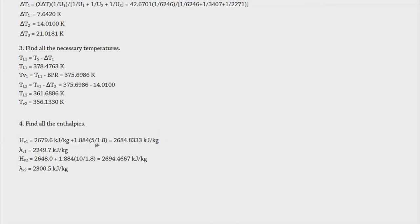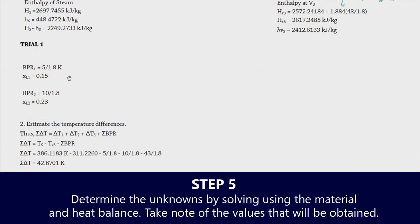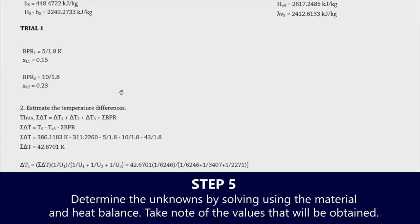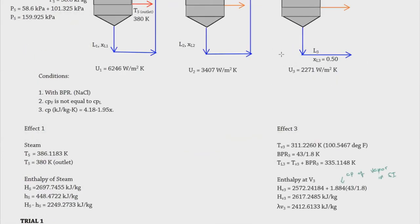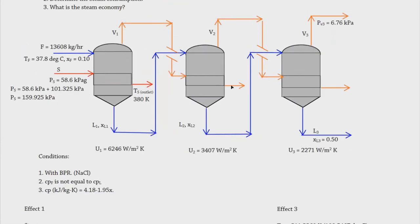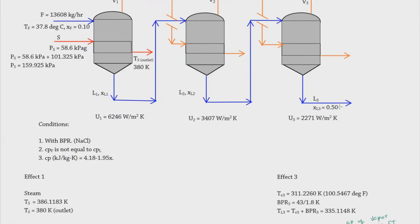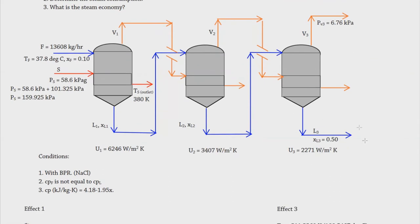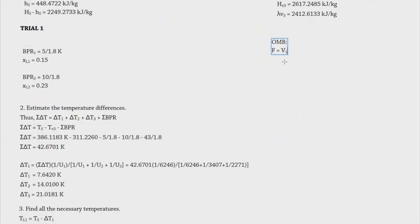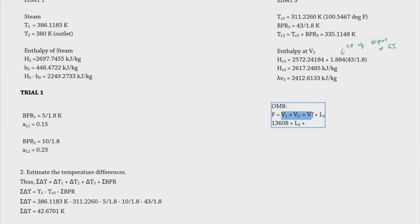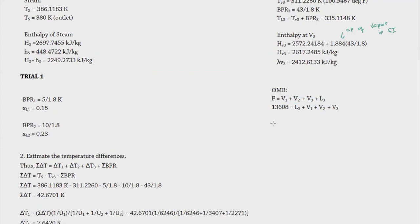Now that enthalpies and temperature profiles are complete, we proceed with material and heat balances. The overall material balance (OMB): feed F = V1 + V2 + V3 + L3 = 13,608 kg/hr. For the component balance: F·xF = L3·xL3, so 13,608 × 0.10 = L3 × 0.50, giving L3 = 2,721.6 kg/hr. The total vapor: ΣV = V1 + V2 + V3 = 10,886.4 kg/hr — this will be the numerator for steam economy.